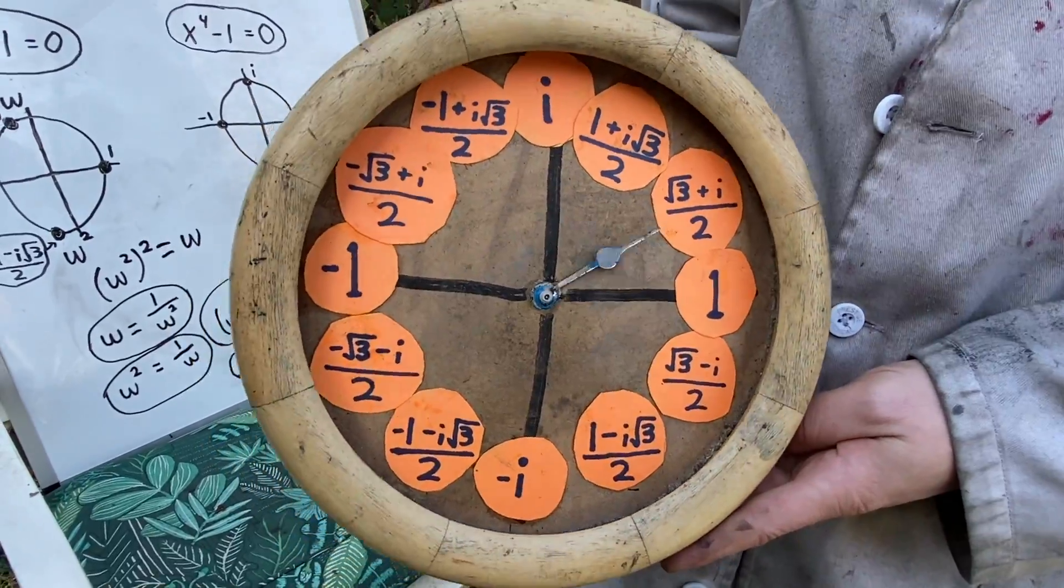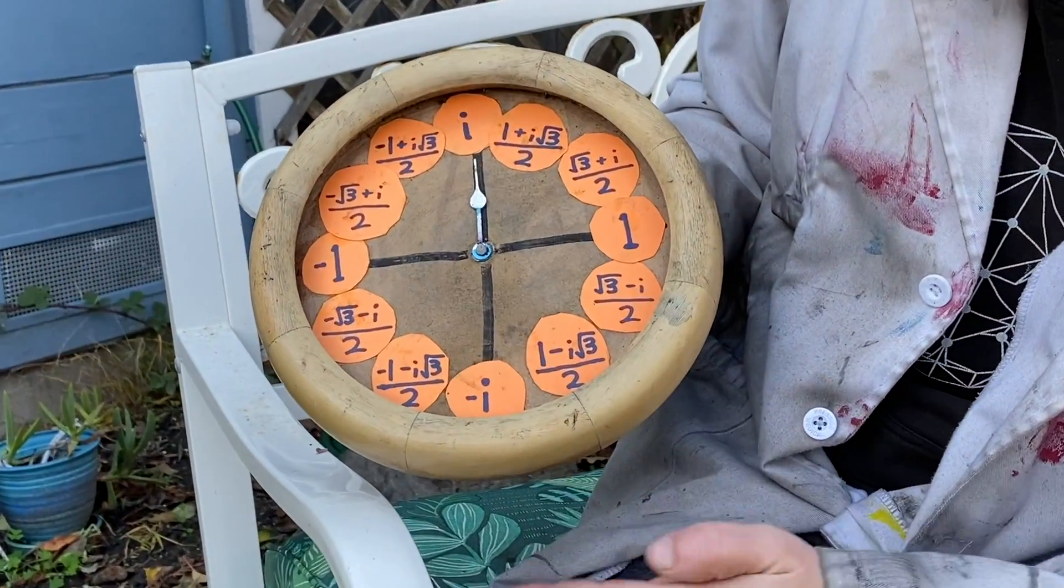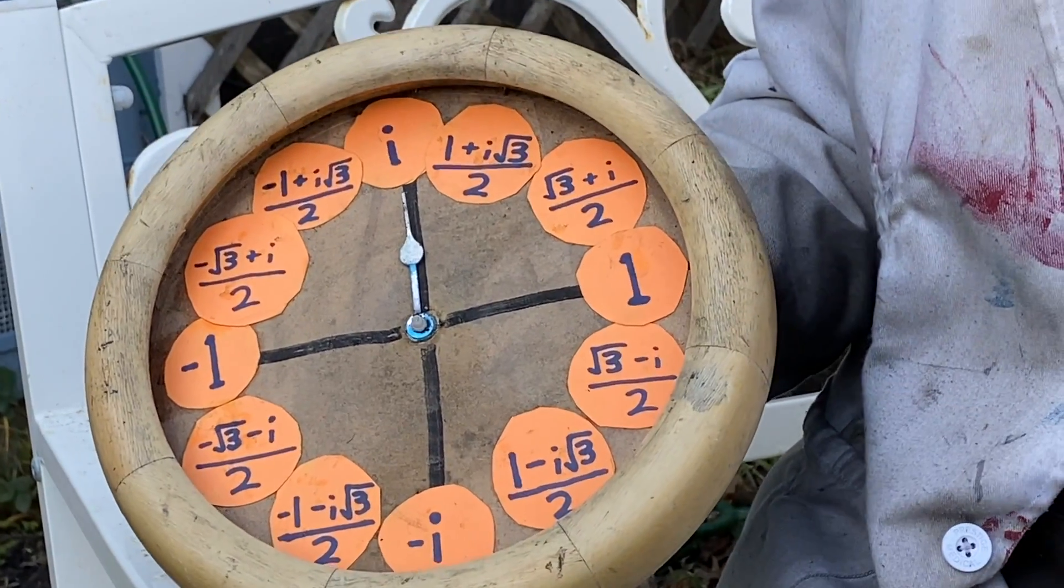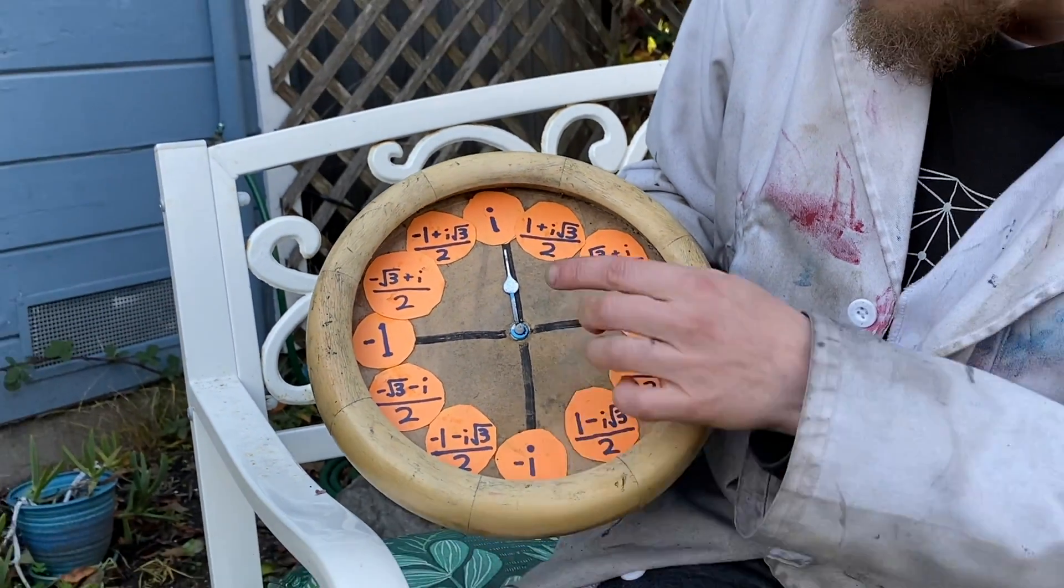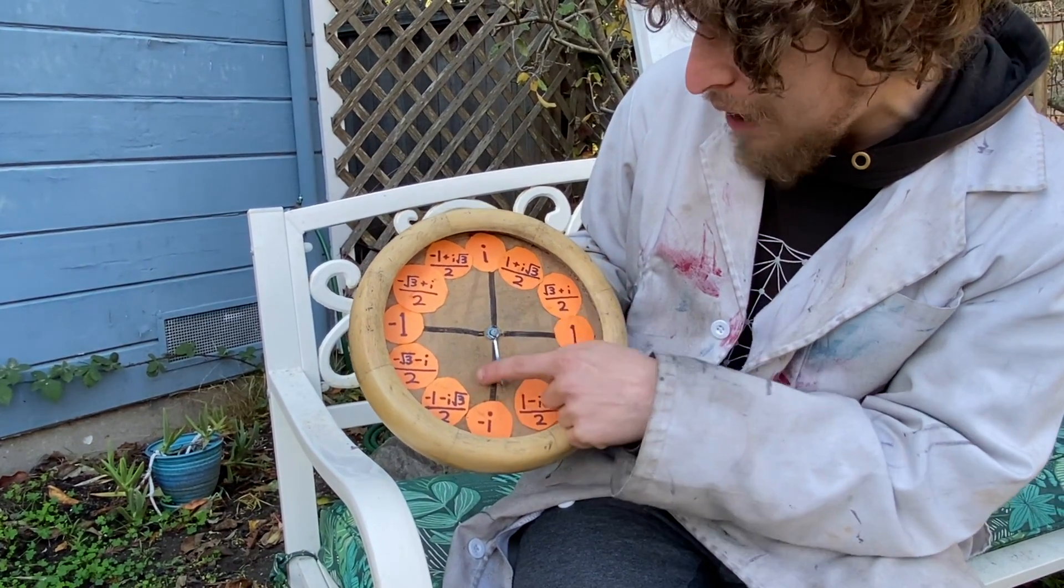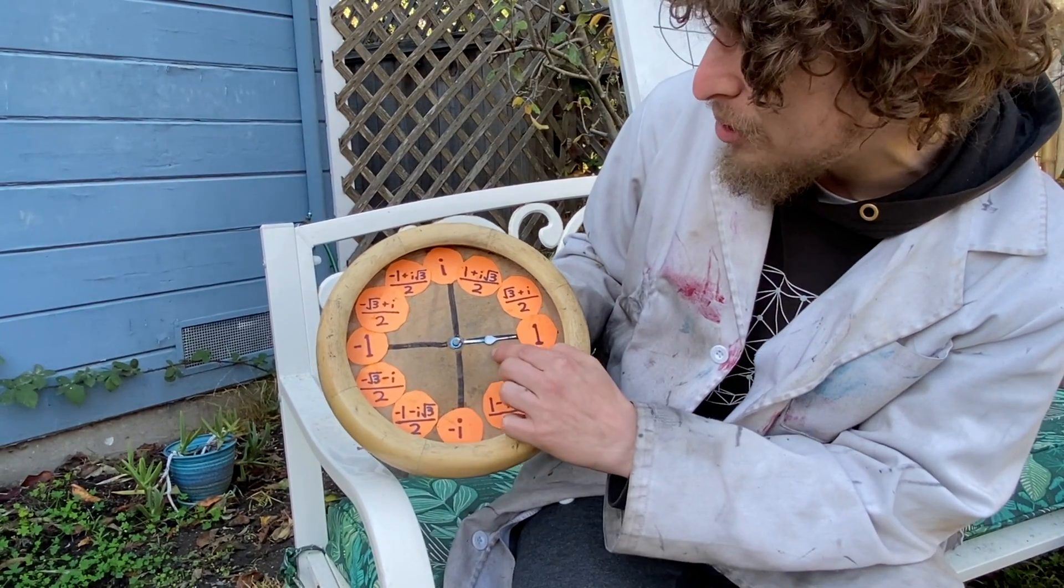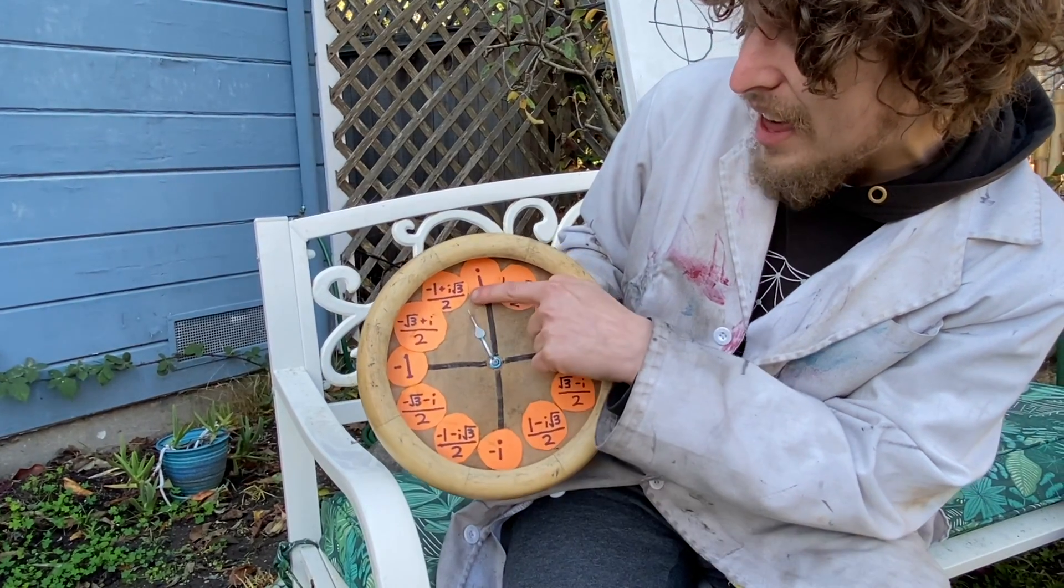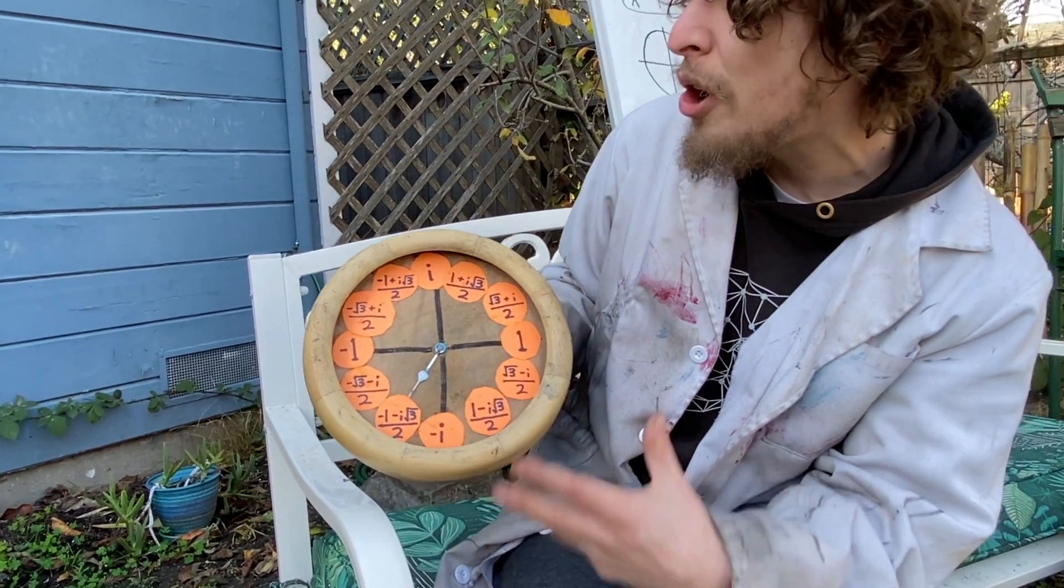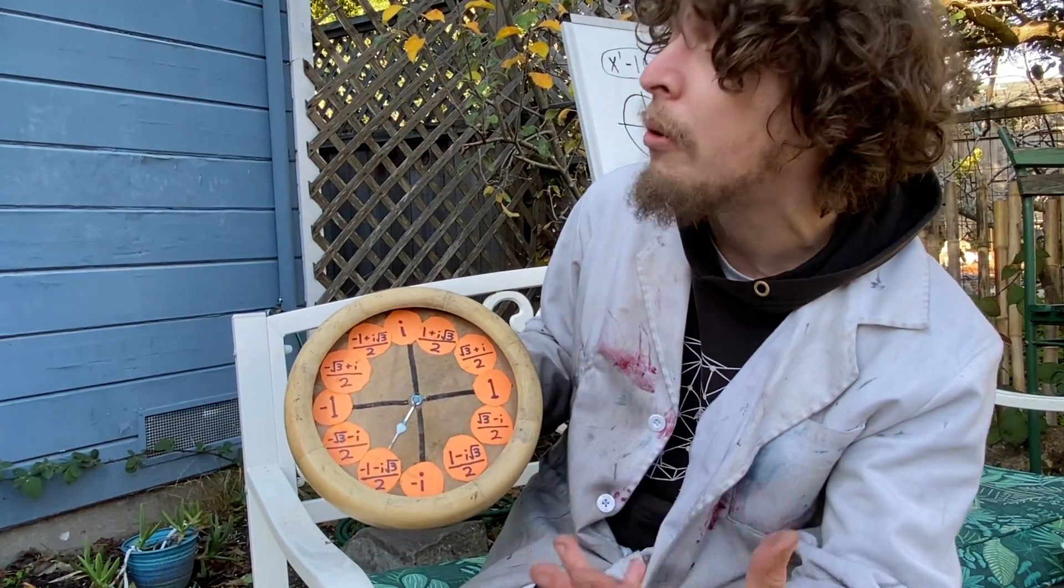Here are the 12th roots of unity, the 12 numbers that if you raised any of them to the 12th power, you'd get one. And it includes the fourth roots of unity, i, negative one, negative i, and one. And it includes our third roots of unity, one, and that stranger looking one, and that stranger looking one.